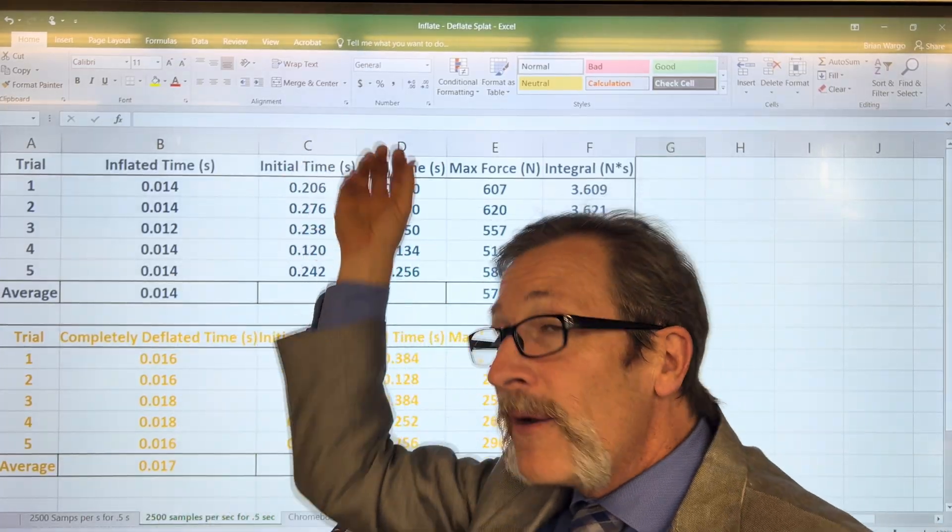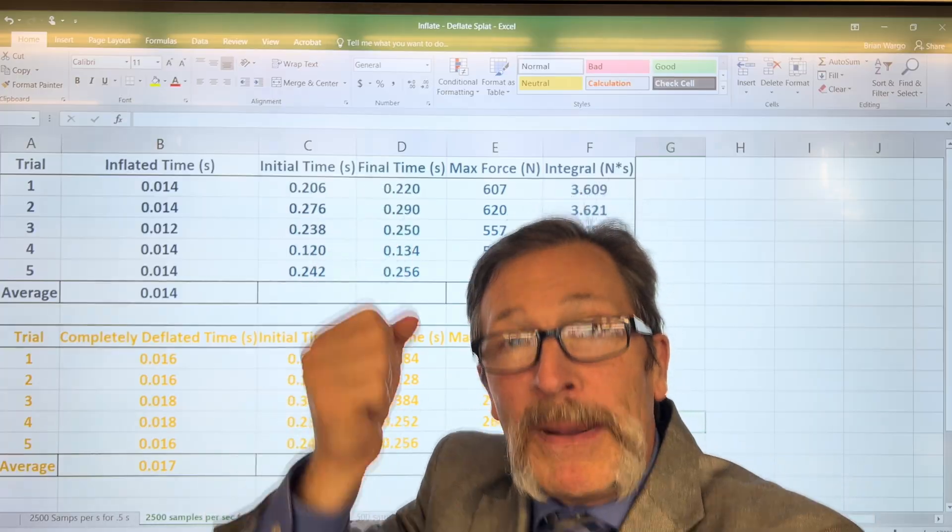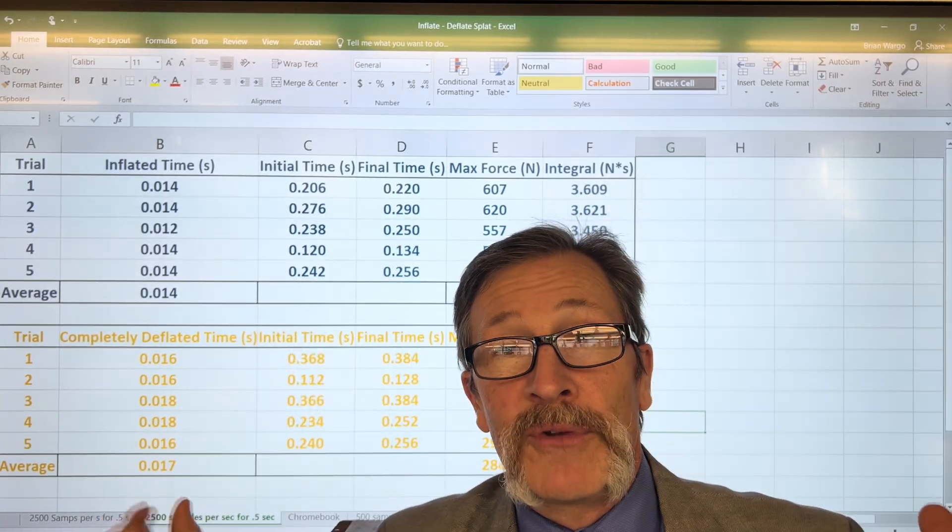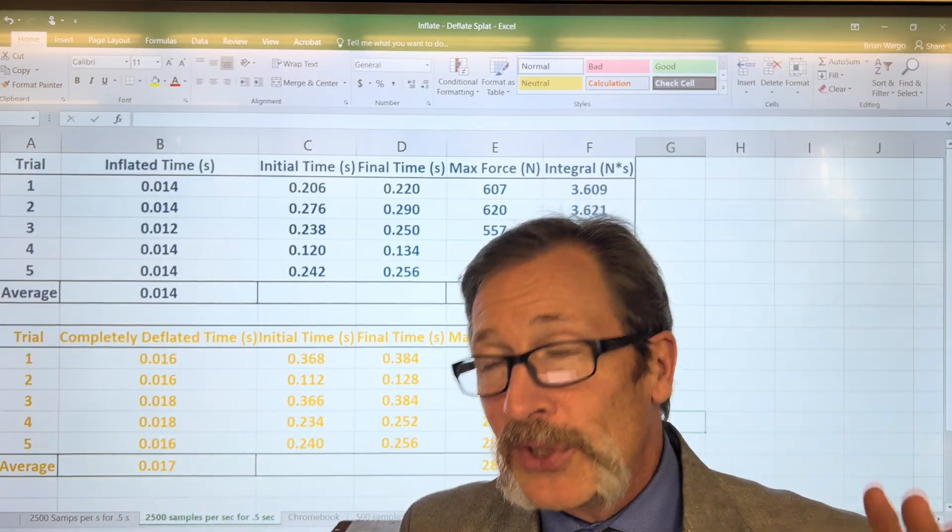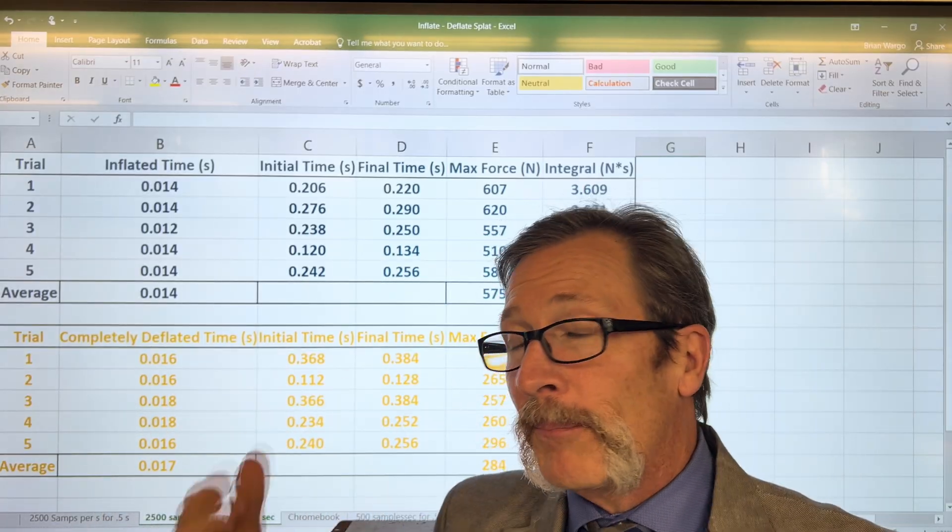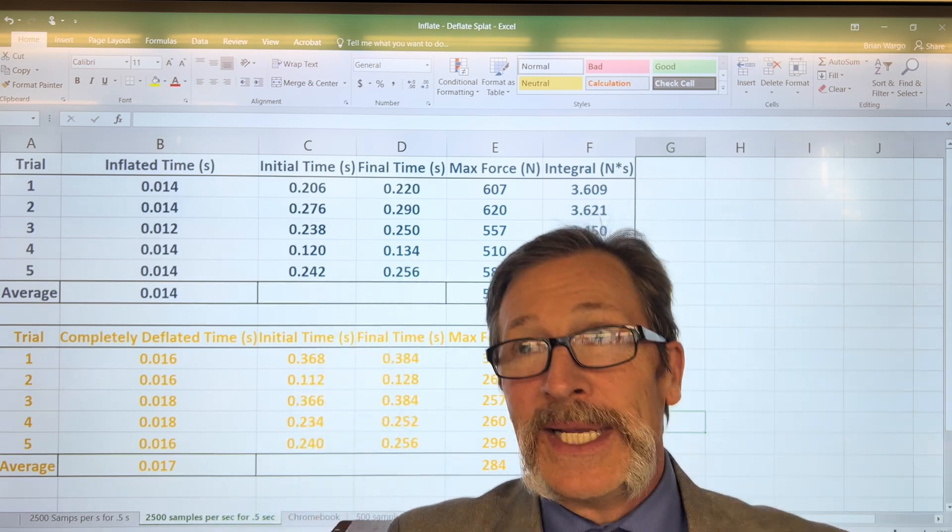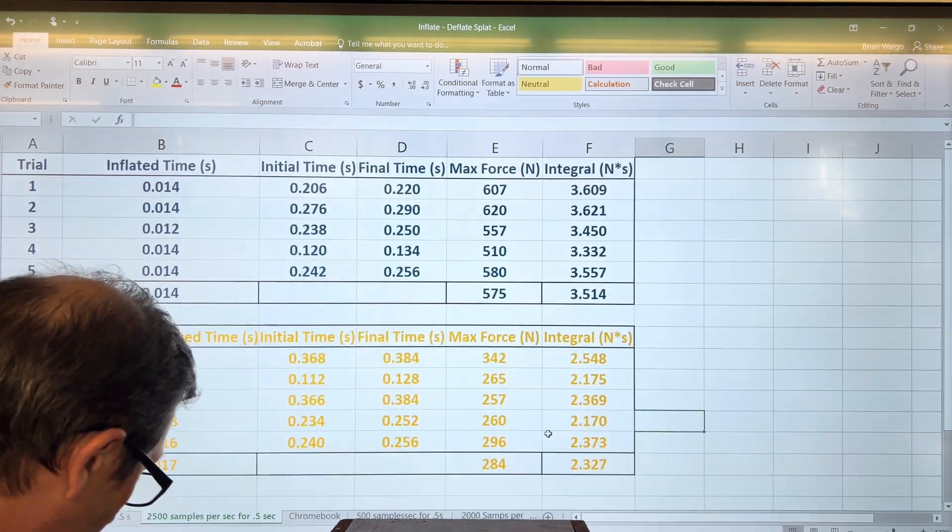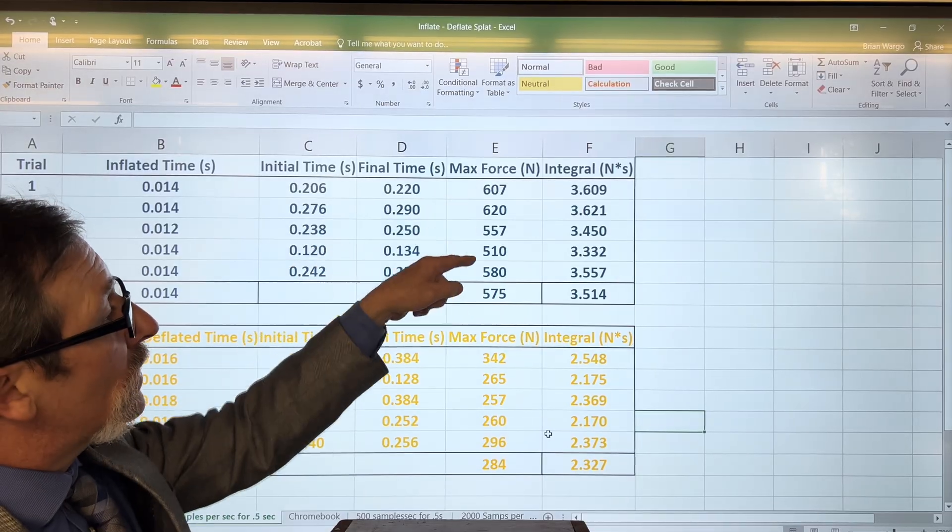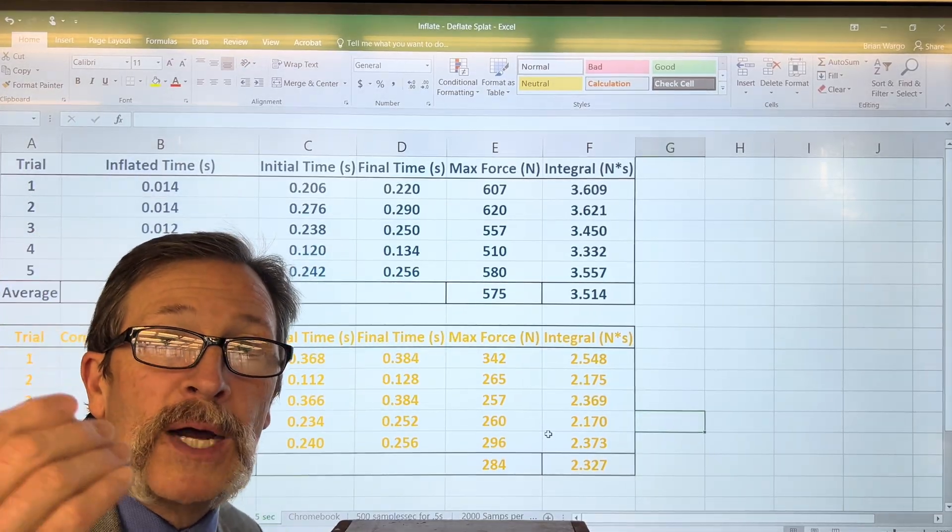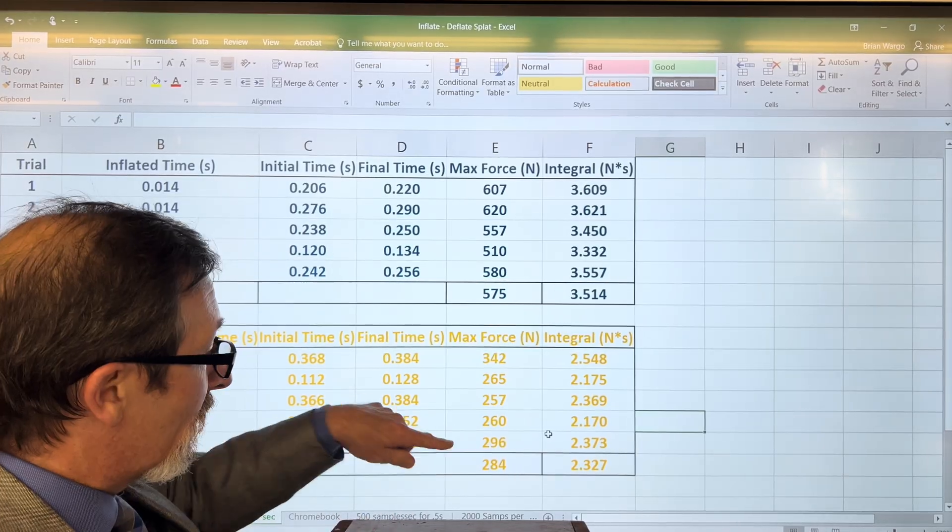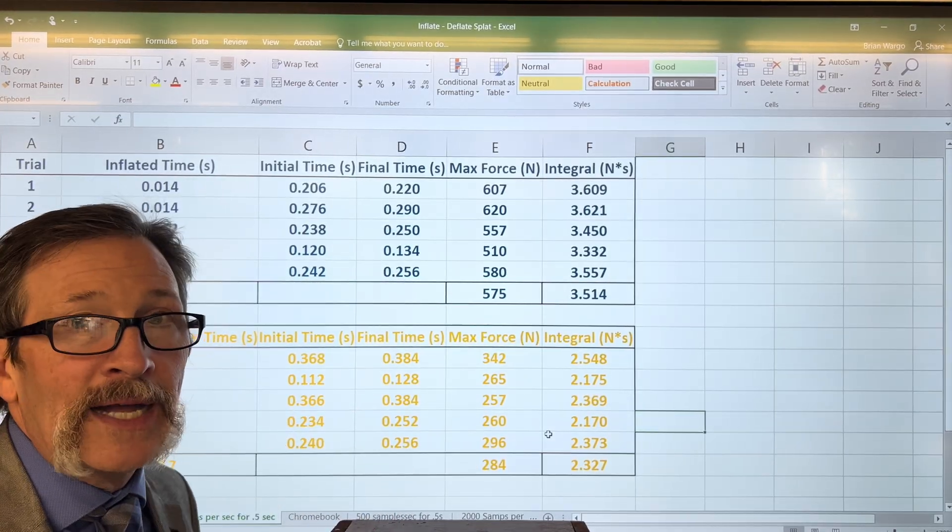It tells us the inflated ball is actually impacting for a shorter period of time than the completely deflated ball. This is counterintuitive for some of the students. They're going to rehash many of these ideas. They're going to say wait a second, how is that possible? And then we'll remind them that we can also think of our force. Notice on average our force is much greater for the ball that bounces versus the ball that splats, 575 on average versus 284.